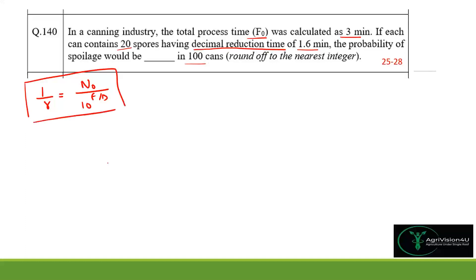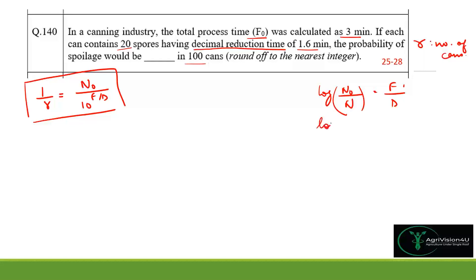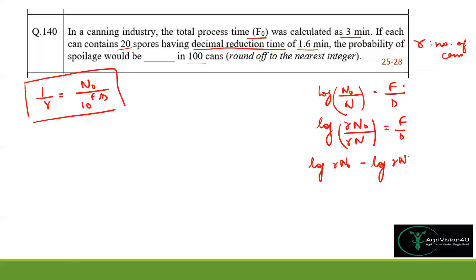To derive this formula: the basic thermal processing equation is log(N₀/N) = F/D. If we consider r number of cans, then log(r·N₀) / (N·r) = F/D, which rearranges to log(r·N₀) − log(r·N) = F/D.